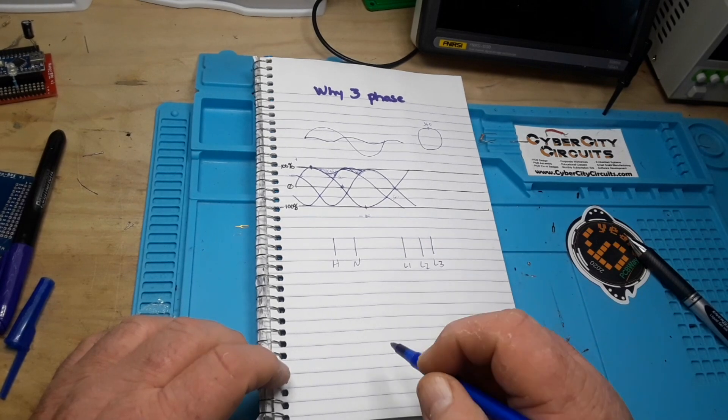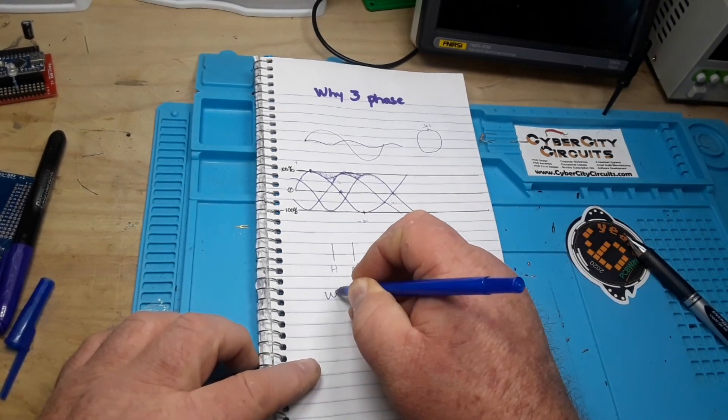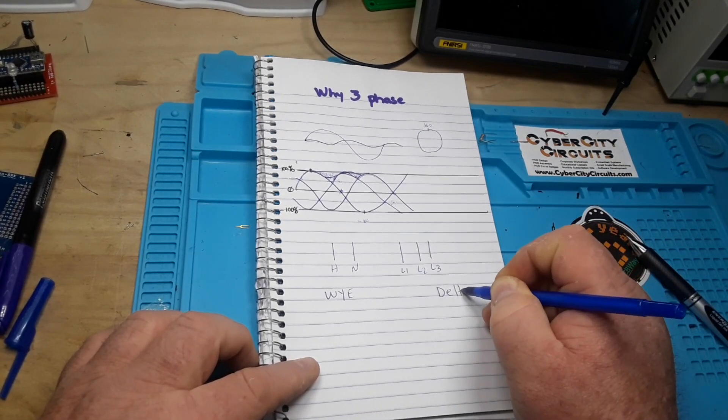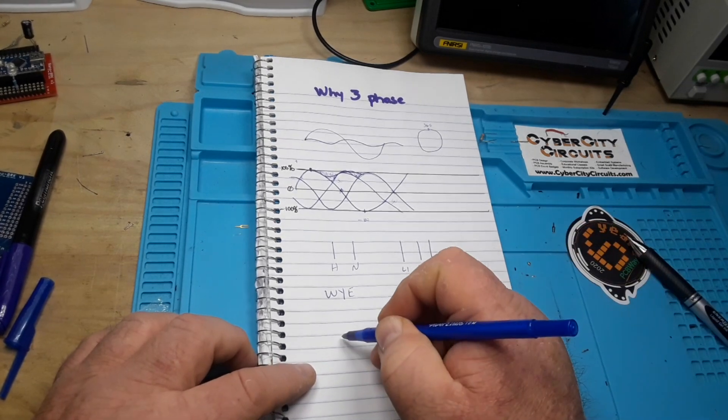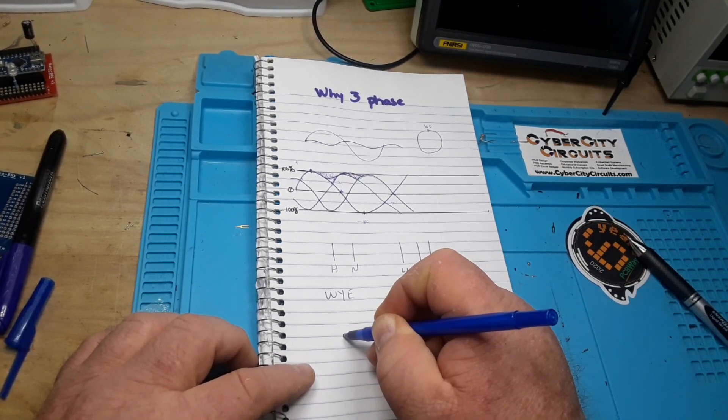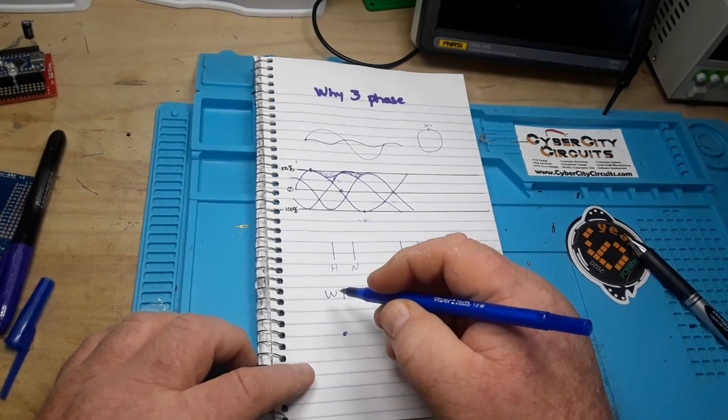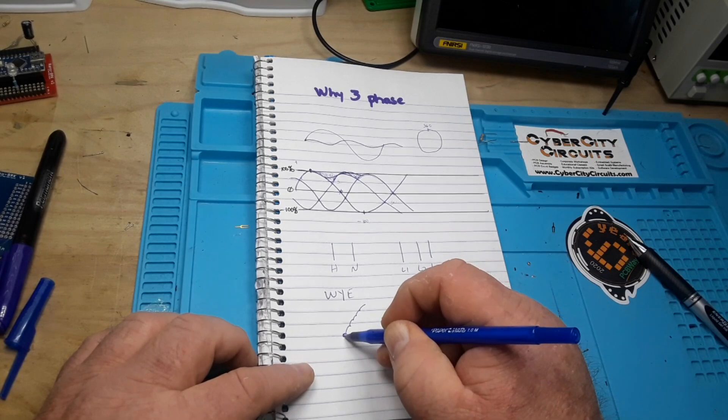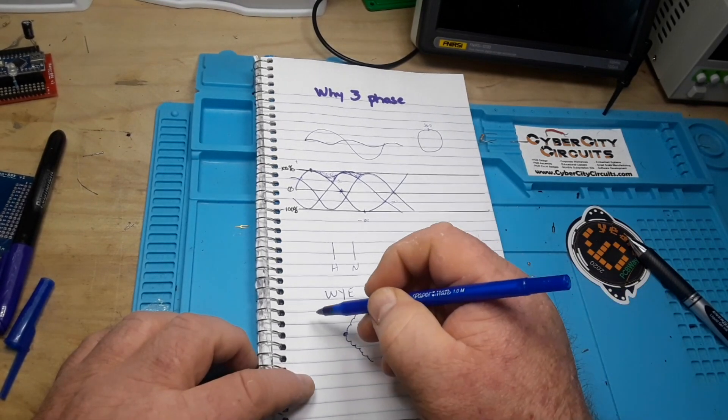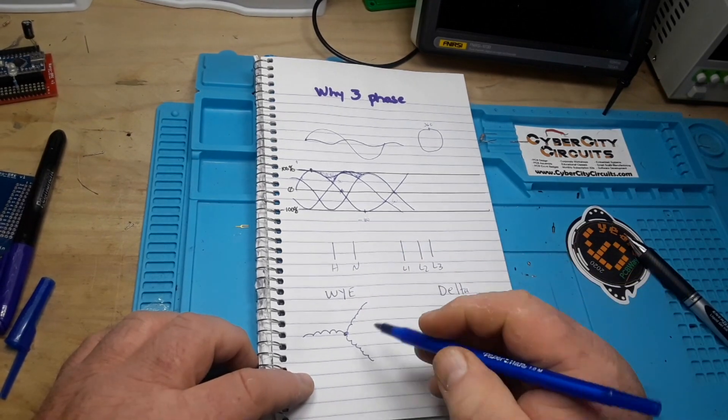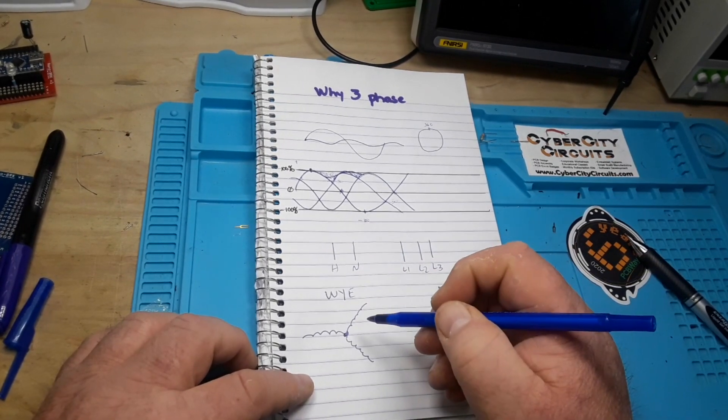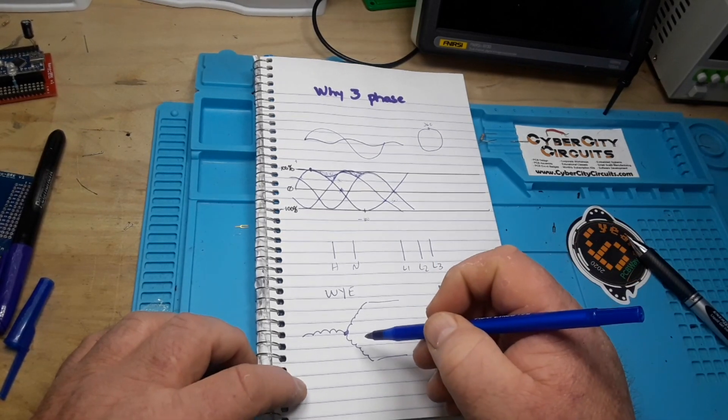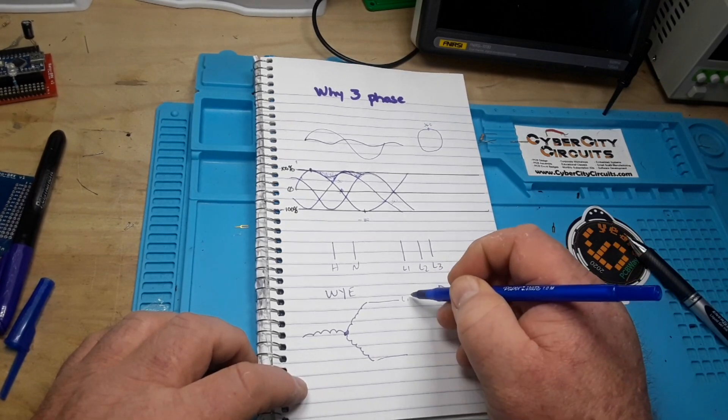The first one is called the Y, and the second one is called the Delta. In the Y, we have a neutral point something like this, and then we have one leg here, one leg here, and one leg here. This is our neutral point. So come off like this, call this L1, or this is actually L2, and this is L3.